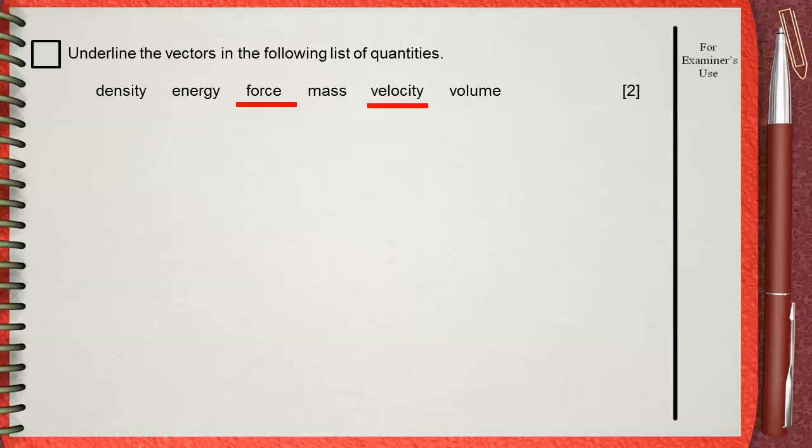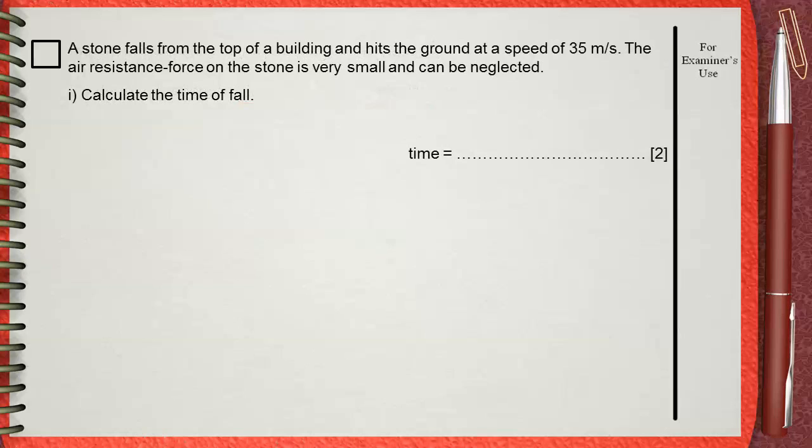Density, energy, mass, and volume—all these are scalar quantities. Another question: A stone falls from the top of a building and hits the ground at a speed 35 meters per second. The air resistance force on the stone is very small and can be neglected.